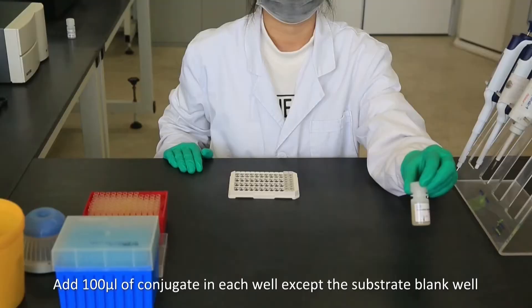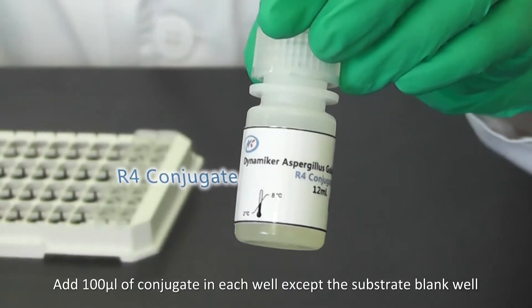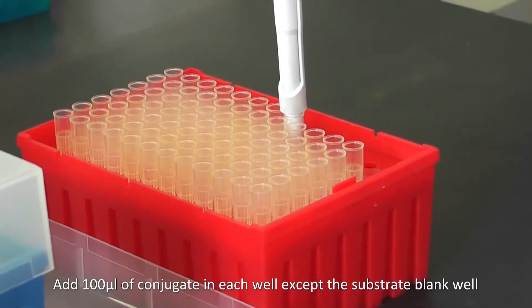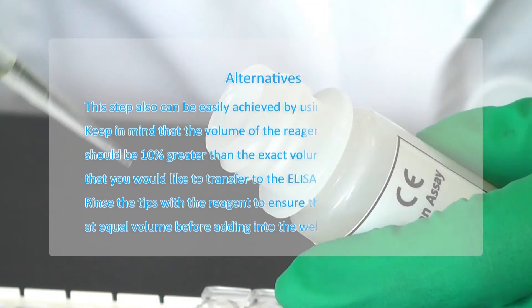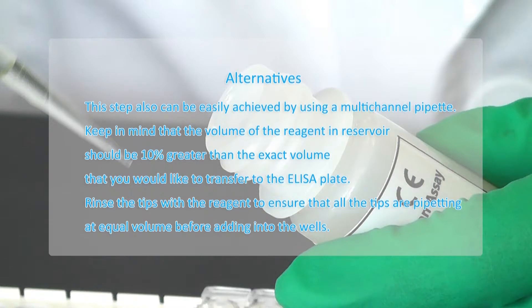Add 100 microliters of conjugate in each well except the substrate blank well. This step also can be easily achieved by using a multichannel pipette. Keep in mind that the volume of the reagent in reservoir should be 10% greater than the exact volume that you would like to transfer to the ELISA plate.